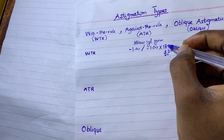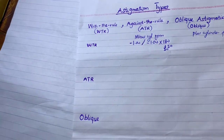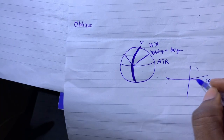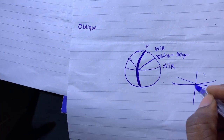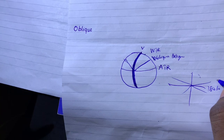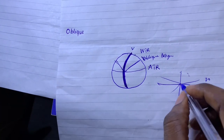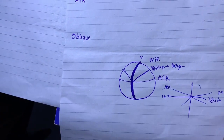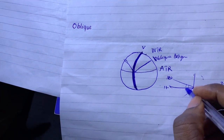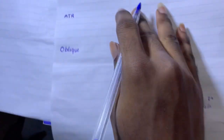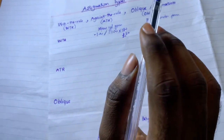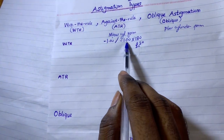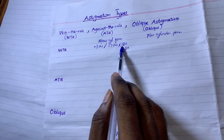On the protractor, 180 equals zero. So if I add 30 I get 30, and if I subtract 30 I get 150. For minus cylinder prescriptions, if the axis lies in this region — between 0 and 30 or 150 and 180 — it qualifies as with-the-rule astigmatism.